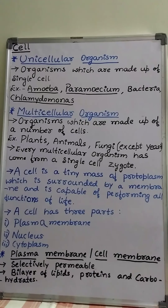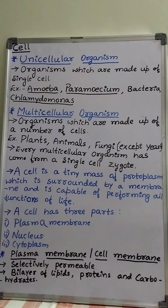In human beings, a well-developed digestive system plays a major role in the digestion of food. A well-developed respiratory system plays a major role in the exchange of gases. The organ like heart is specialized to pump the blood. A well-developed circulatory system transports blood to different parts of the body, carrying oxygen. A well-developed excretory system, which includes the kidney, filters the blood and removes the waste produced during metabolic activities.